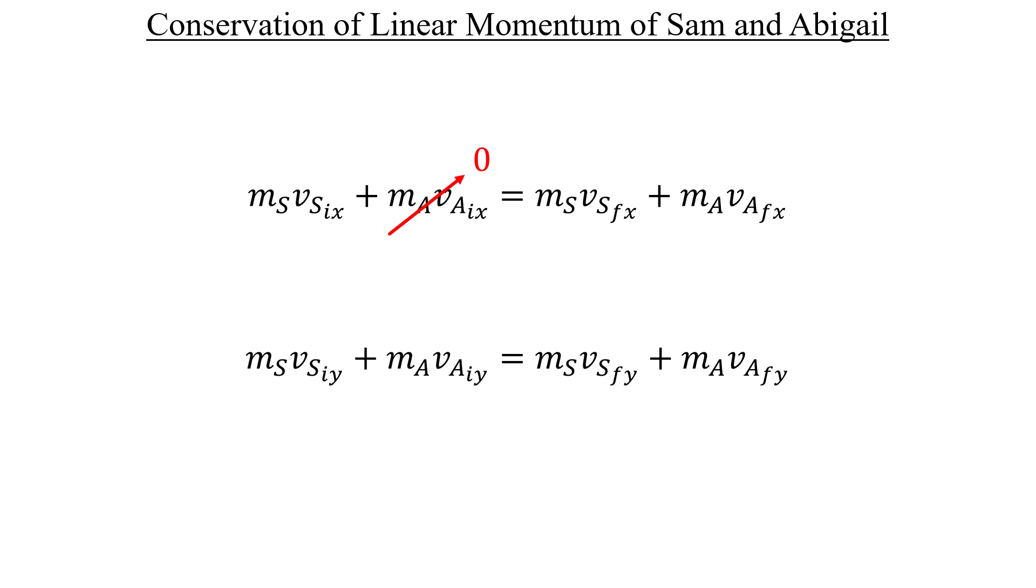The same thing goes for Sam, except in the y direction. He was moving purely along x, so his y-velocity would be zero. And hence, so too would his y-momentum.